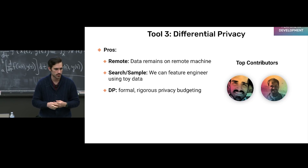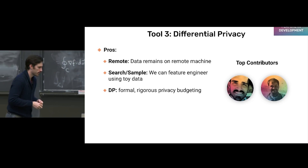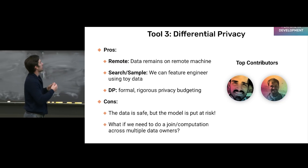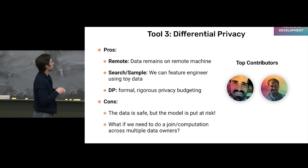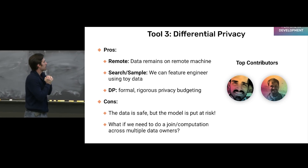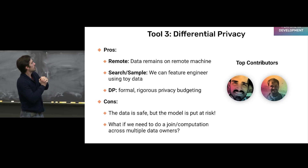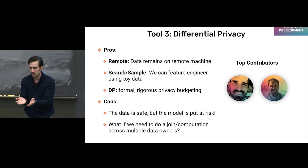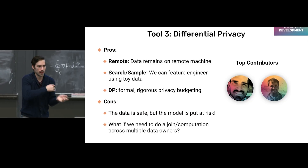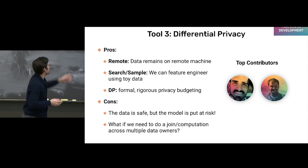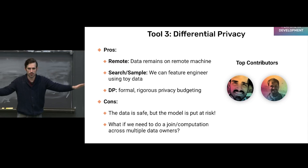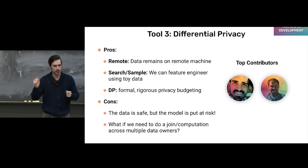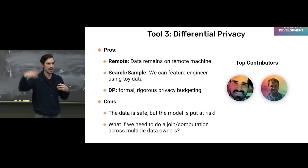The two remaining weaknesses of this approach are: first, the data is safe, but the model is put at risk — if I'm sending my model into the hospital to train as a cancer classifier, it's a bit of a bummer to send a ten-million-dollar healthcare model to a thousand different hospitals. Second, what if I need to do a join — a computation across multiple different data owners who don't trust each other? Who sends whose data to whom? And thirdly, as was pointed out: how do I trust that these computations are actually happening the way I'm telling the remote machine they should happen?